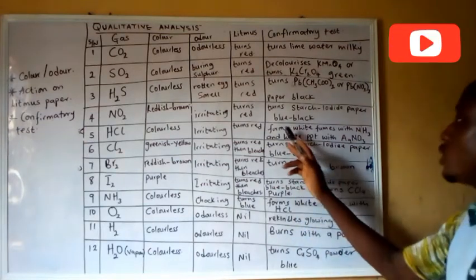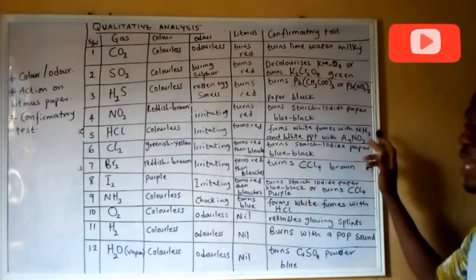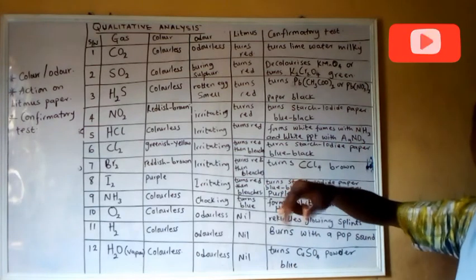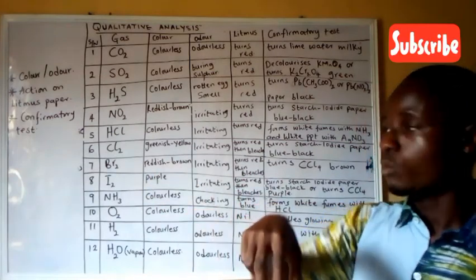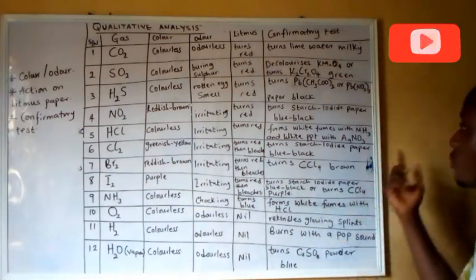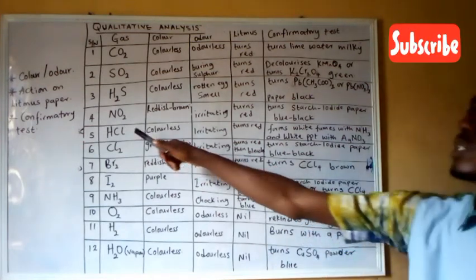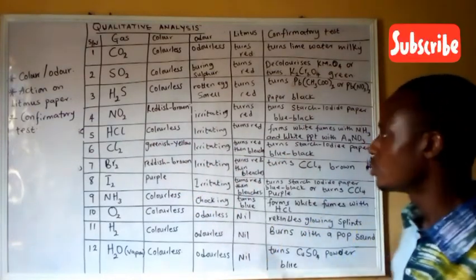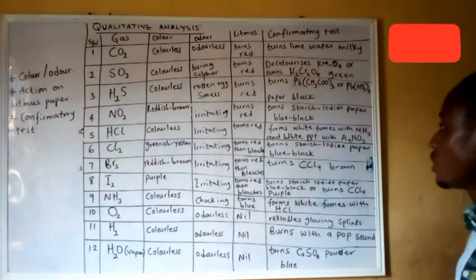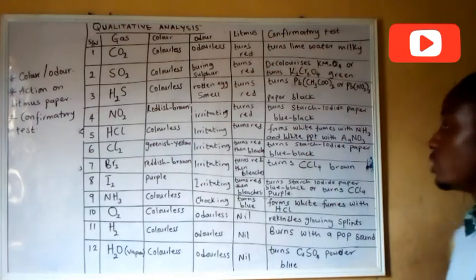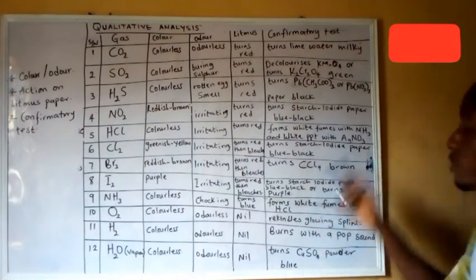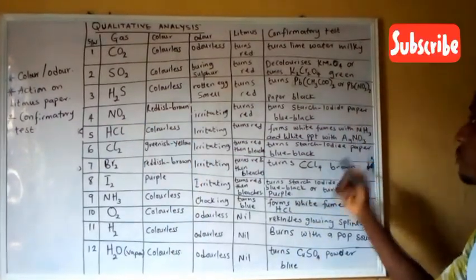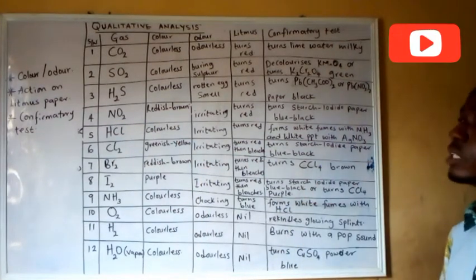HCl (hydrogen chloride) is colorless with an irritating or repulsive smell and is an acidic gas. Its confirmatory test: it forms white fumes with NH3 solution — introducing NH3 to HCl gas produces white ammonium chloride (NH4Cl). Alternatively, it forms a white precipitate with silver trioxonitrate(V) (AgNO3) solution in a capillary tube, confirming HCl.